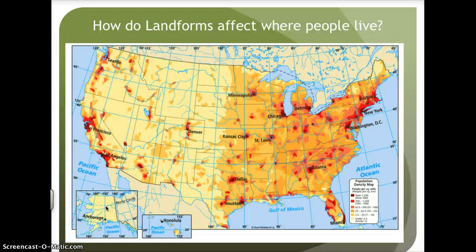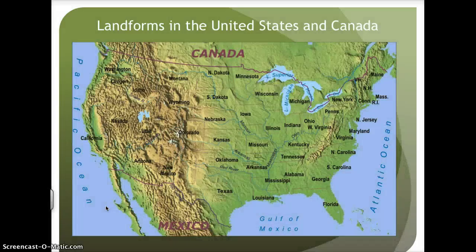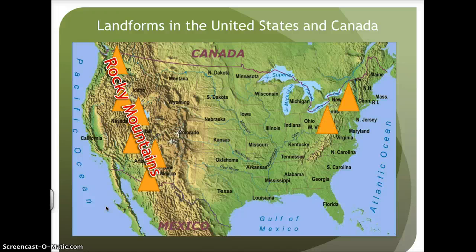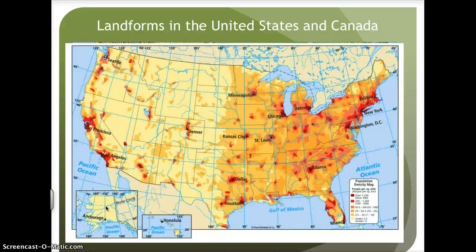So how do landforms affect where people live? Looking again at our population density map, notice that in the western region, there is a large area where very few people live. Looking at a physical map, you'll notice along the western part of the United States a mountain range that extends from Canada, south through the United States, and into Mexico — the Rocky Mountains. The second mountain range lies along the eastern coast, the Appalachian Mountains. In the center of the United States is a large flat area known as the Great Plains. The Rocky Mountain Range has an absence of people due to its rough terrain, and in the Great Plains region there are lots of farms but a large absence of large cities.